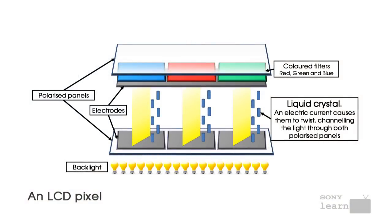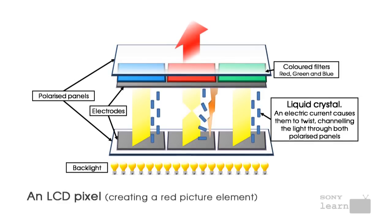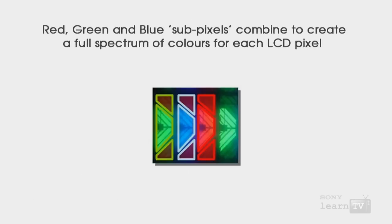All LCDs fundamentally work the same way. They have a backlight behind the screen, and that backlight is shining through a liquid crystal panel. Each individual pixel is represented by a liquid crystal door, which can open to a variety of different levels to allow various amounts of light to pass through. In front of each of those doors you have a red, a green, or a blue coloured filter.